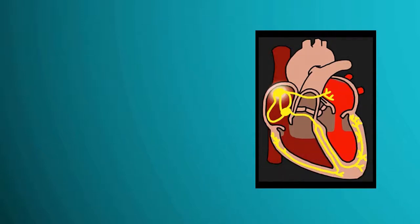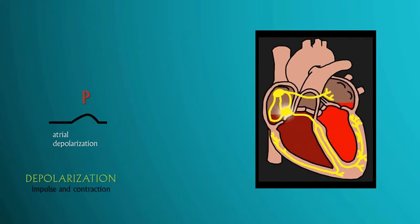The heartbeat is initiated as the SA node sends the impulse through the atrium, causing them to contract and reach the AV node.